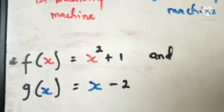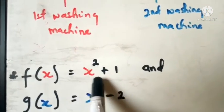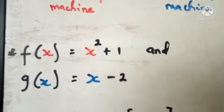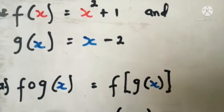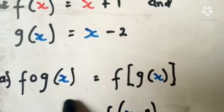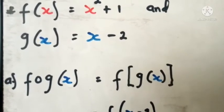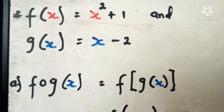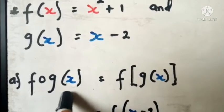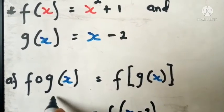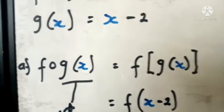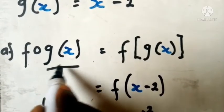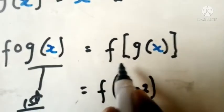Let's look at a question. You are given two different functions — this is the first function and this is the second function, like two different machines. You have been asked to find f of g of x. Now look at the arrangement carefully. F is the last machine and G is the first machine. So you are going to place your input into the first machine, which is g of x. After washing it there, you remove it and place it into the second one. You can rewrite f(g(x)) by working from the inside out.